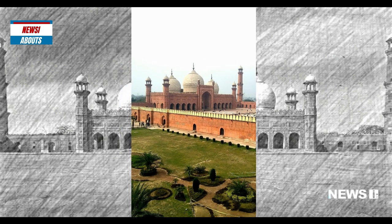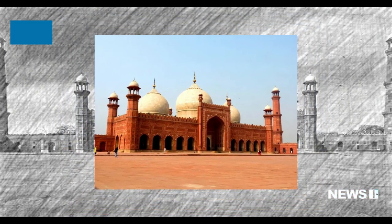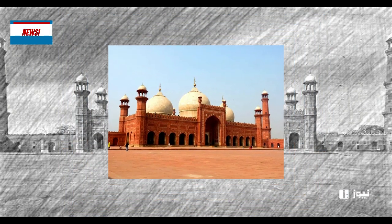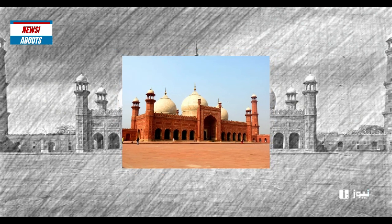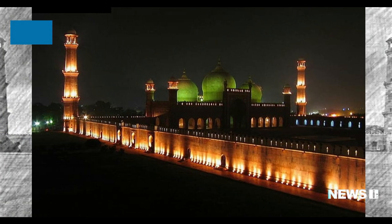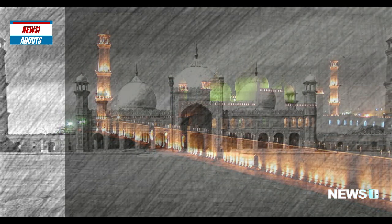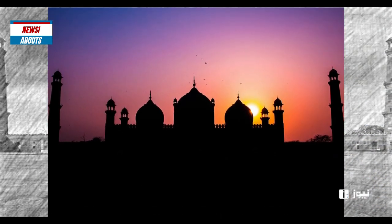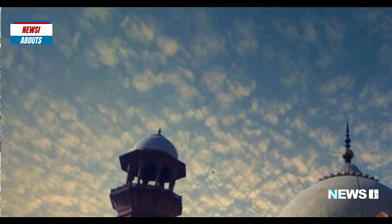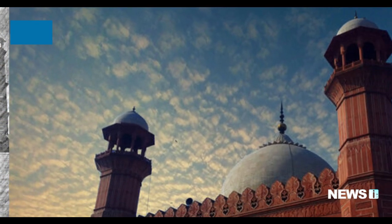The mosque's central prayer hall can accommodate up to 100,000 worshippers at a time, making it one of the largest mosques in the world. The mosque's architecture is a blend of Mughal, Persian, and Indian styles, featuring intricate carvings, calligraphy, and geometric patterns on the walls and ceilings.